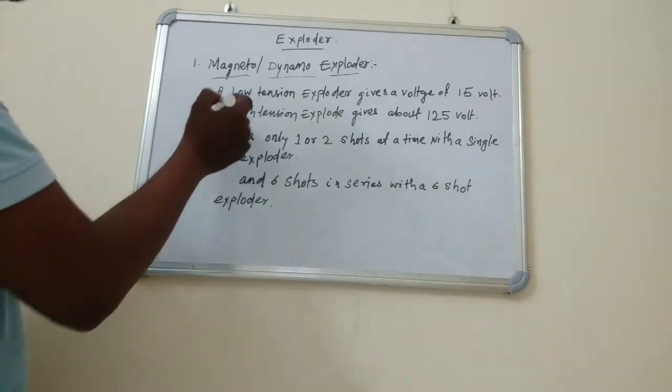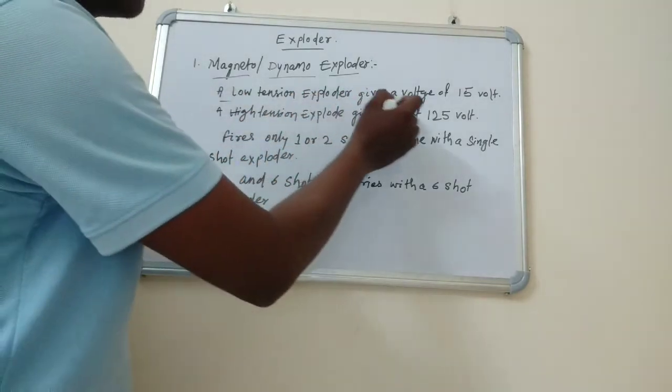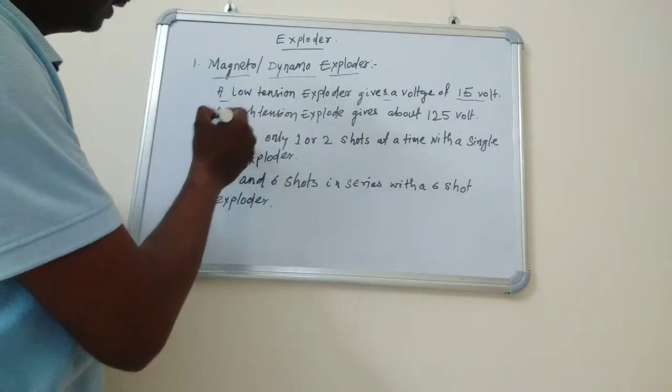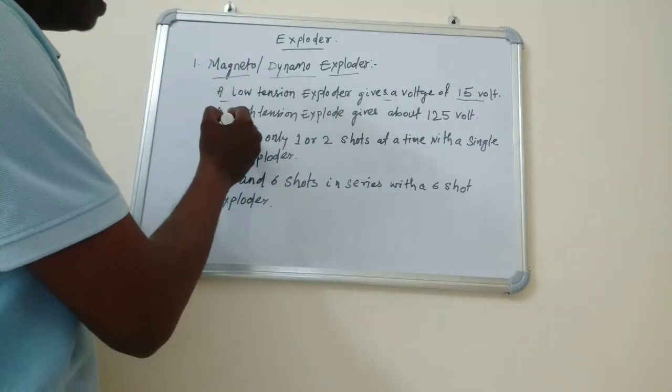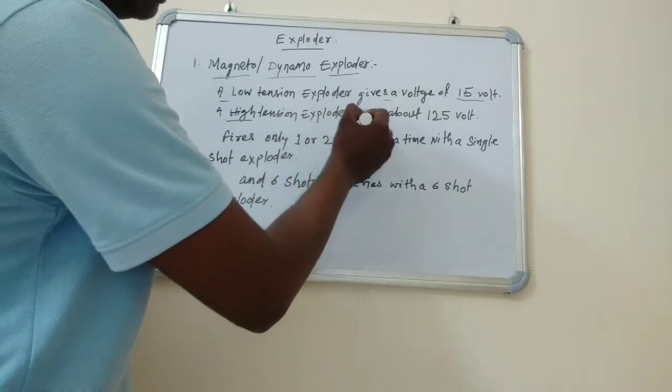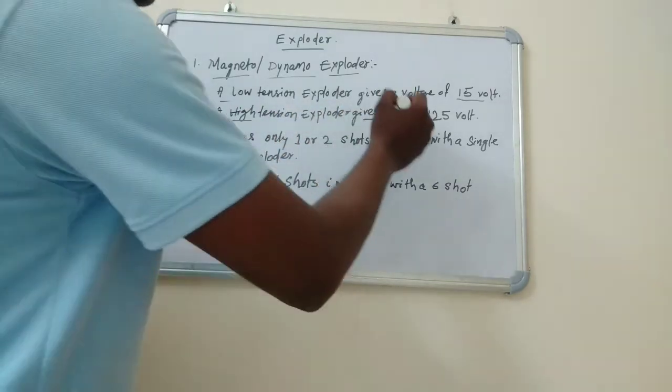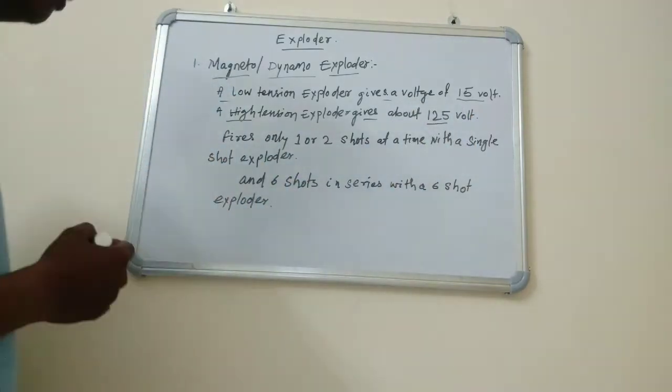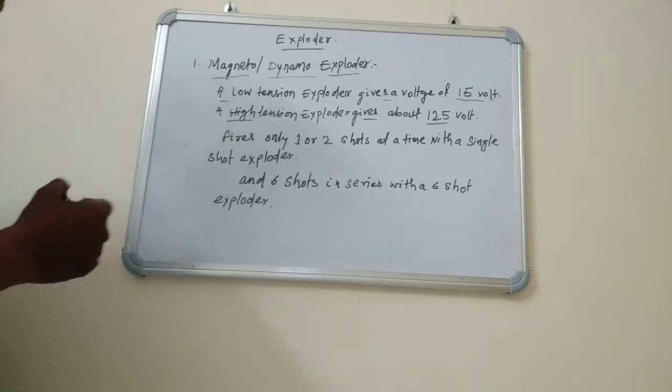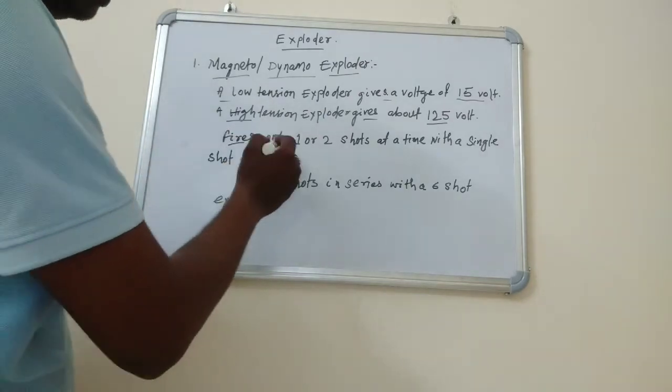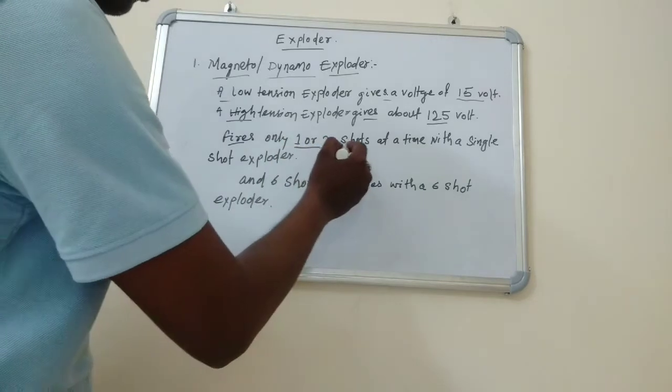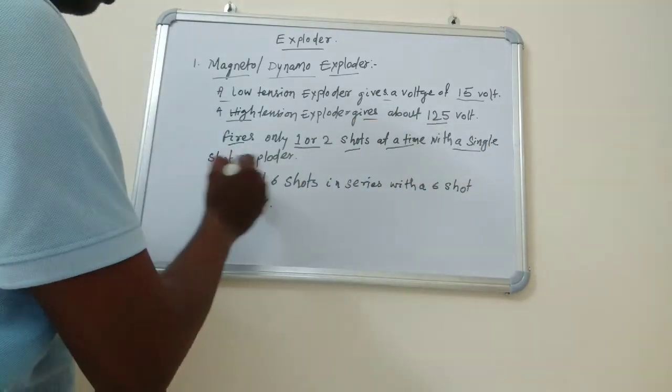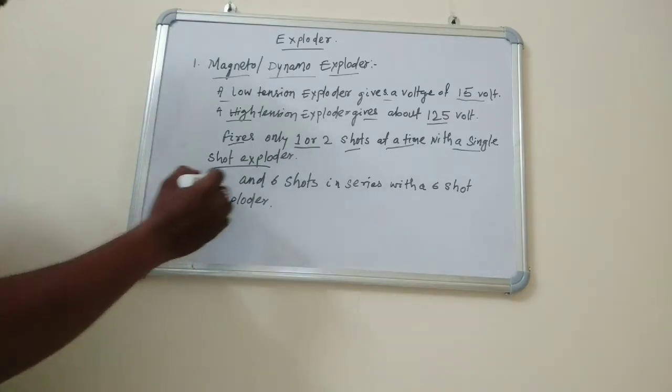A low tension exploder gives a voltage of 15 volts and a high tension exploder gives voltage about 125 volts. This type of exploder fires only one or two shots at a time with a single shot exploder, and six shots in series with a six shot exploder.